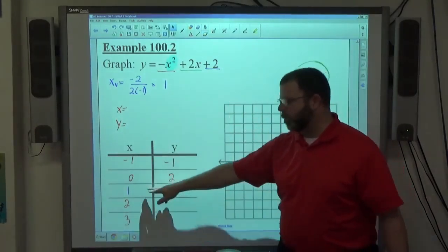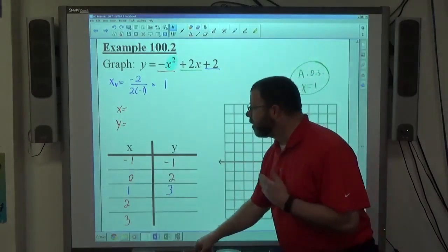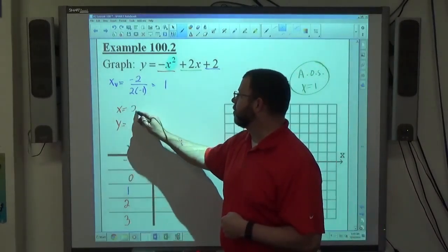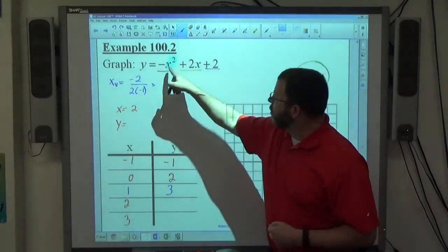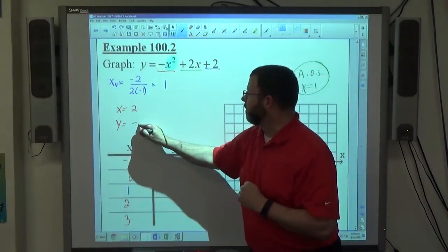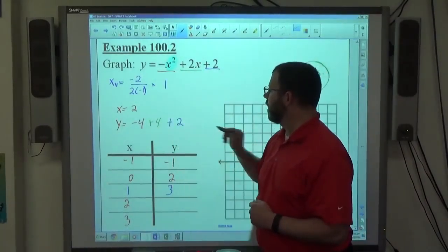What if we're wrong? What if we had the wrong number here? Then we're not going to get symmetry, right? So what I would do personally is I would go ahead and evaluate x equals 2. So there's x equals 2. I want to put it into here. 2 squared is 4. Make it negative. 2 times 2 is plus 4. And then plus 2. What does that equal?